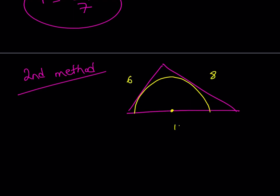So this is 6, this is 8, and this is 10. When I made those connections, I found that this was an r and this was also an r. Notice that this is a 90-degree angle and this is a 90-degree angle. Let's call this angle alpha and this angle beta. Alpha and beta are complementary — they add up to 90. In the small triangle, alpha and beta also add up to 90, so this is beta and this is alpha. In other words, these two triangles are similar.